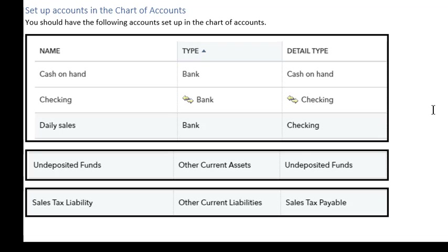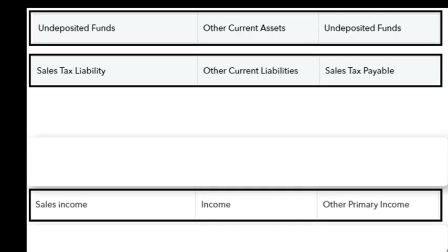Here are the accounts that need to be set up in QBO: cash on hand, checking, daily sales, undeposited funds, sales tax liability, and also sales income.